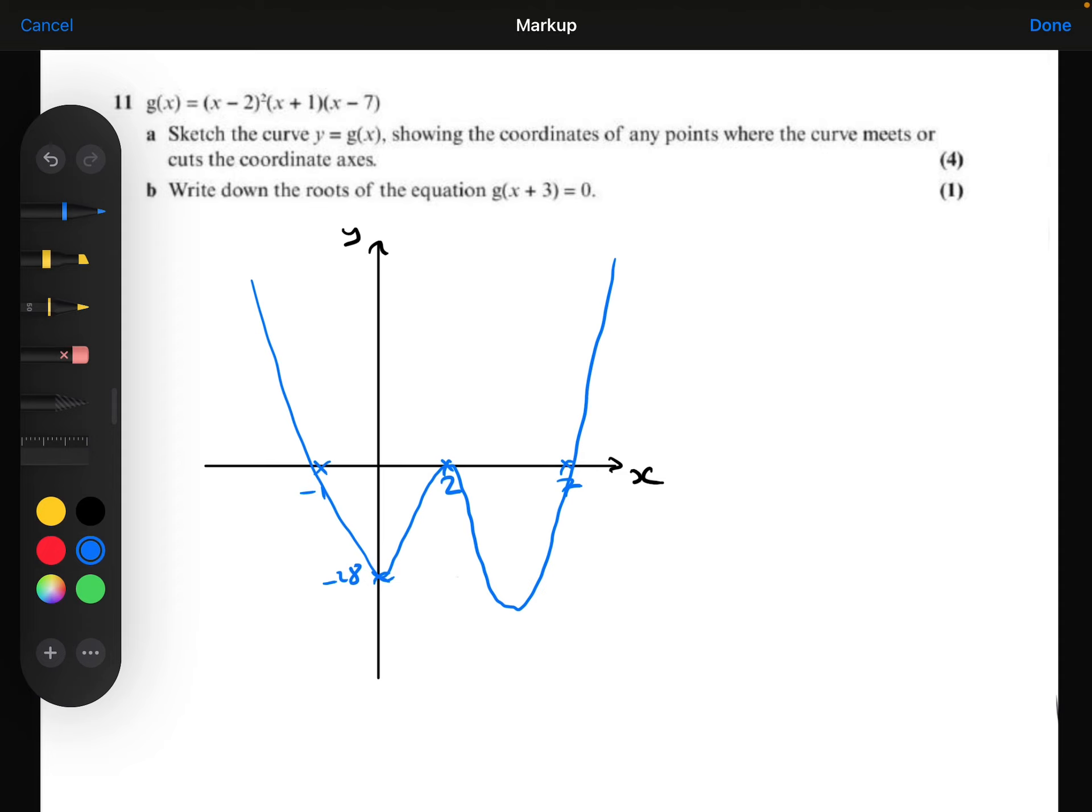Part B says write down the roots of the equation g of x plus 3 equals 0. So we've drawn g of x, but this is x plus 3. So let's think about what that would look like. That's going to take the g of x graph and it's going to move it 3 squares in the negative x direction. Remember that's plus 3 on the inside here. That means we're taking away 3 from each of the x coordinates.